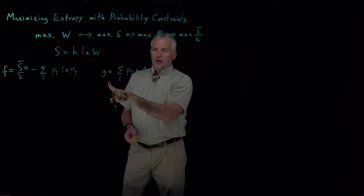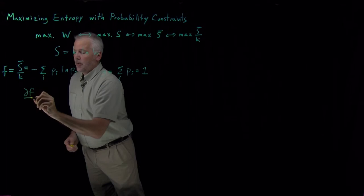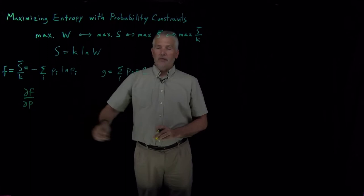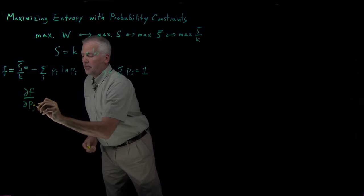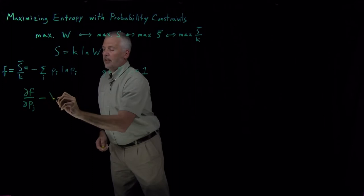So we're looking for the conditions where the derivative of this expression with respect to one of the probabilities, maybe P1 or P2, we're looking for, let's use P sub j, we're looking for the derivative of F with respect to Pj minus Lagrange multiplier dg/dPj. We want that to be equal to zero.